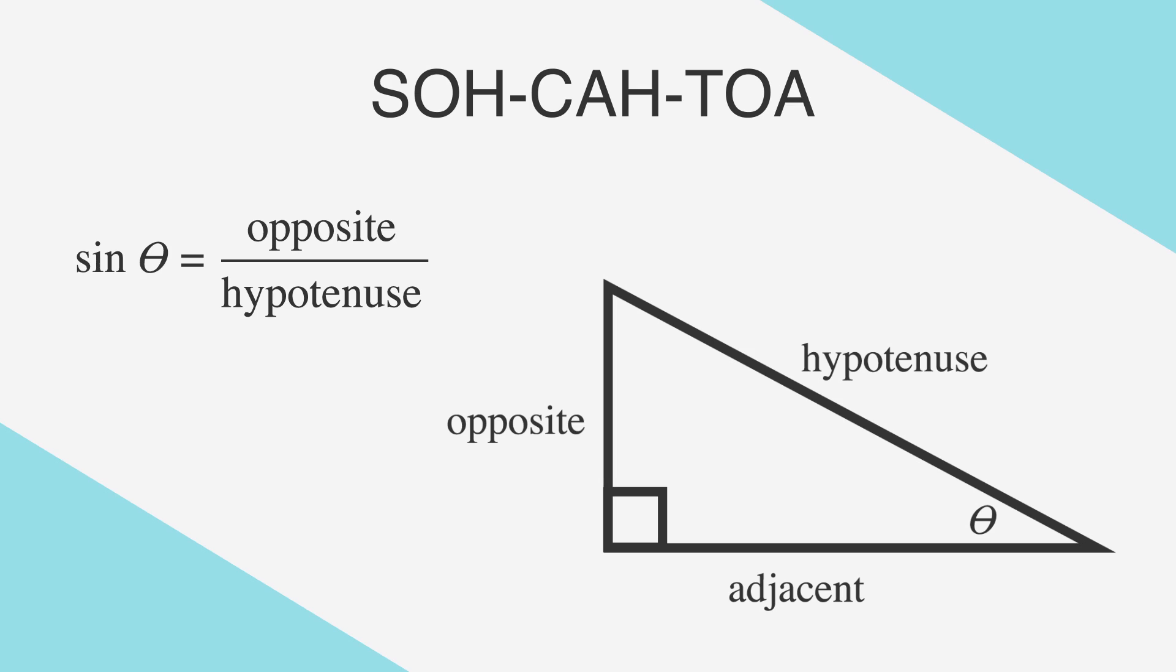We use this melodious acronym to find missing sides or angles of a right triangle. SOH is an abbreviation for sine of theta, which is the Greek letter used for angle, equals opposite over hypotenuse.